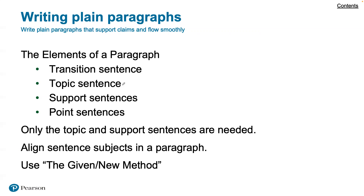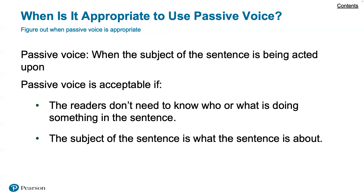You start with a transition, then the introduction, the body, and the closing. The point sentence can help tie to what you'll talk about next. At minimum, you need the topic and support sentences. You can also align sentence subjects throughout a paragraph and use the given/new method — which suggests that every sentence in a paragraph should contain something the reader already knows and something new, so you start with known information and build on it.